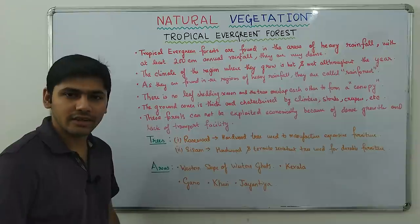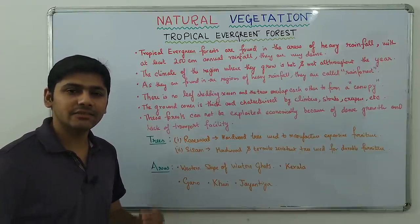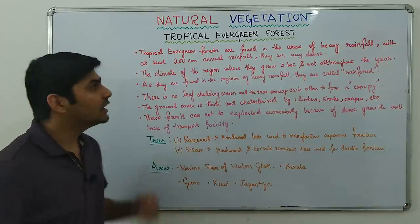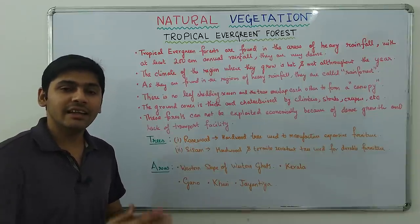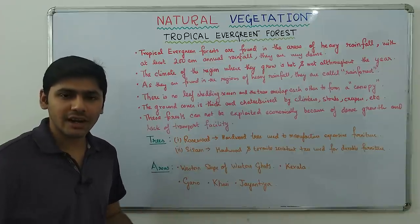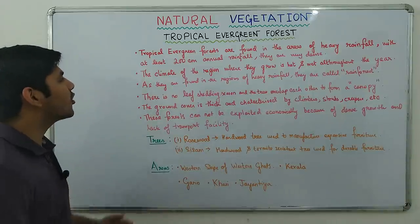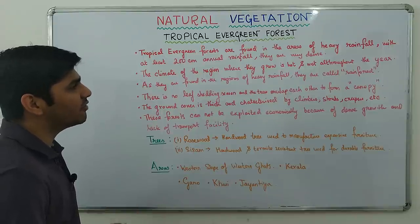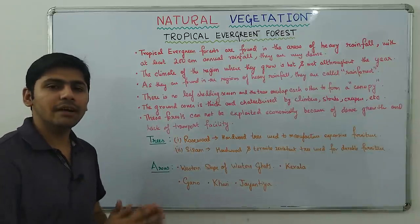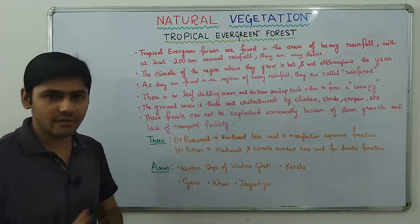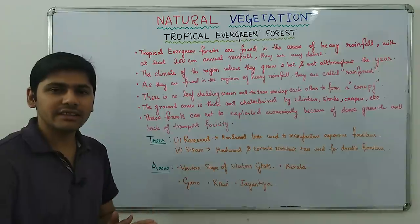Tropical Evergreen Forest is the most dense forest in India, found in regions of very heavy rainfall. It is found in areas receiving at least 200 centimeters of annual rainfall and these forests are very dense. Not only big trees but also ferns, climbers, and creepers are present, meaning there is a very thick undergrowth.